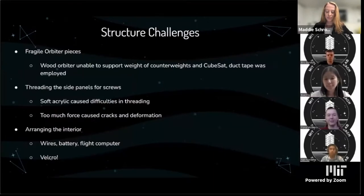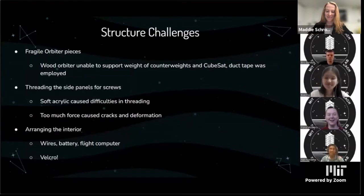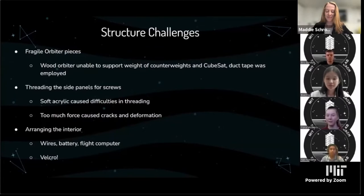Some of our structure challenges were that the orbiter pieces were really fragile, so they would break super easily when trying to assemble the orbiter or when balancing the CubeSat on it — Neil ended up duct-taping the whole thing together and it fell apart anyway. Another struggle was threading the side panels on the CubeSat with screws; they didn't come pre-threaded, so we had to force the screws through, and too much force could crack the acrylic.